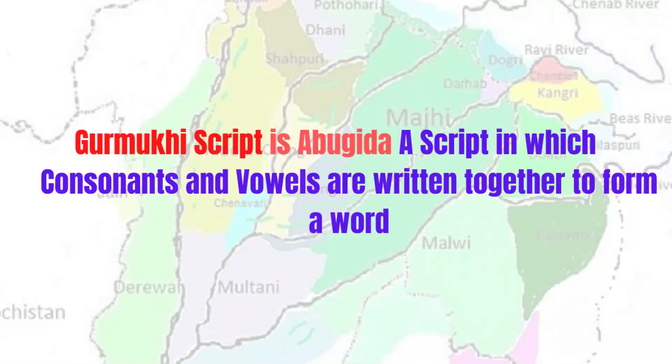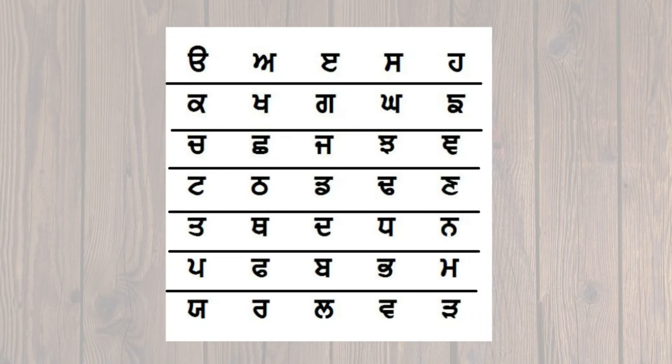Gurmukhi is an abugida script, meaning that the vowels and consonants are written as one unit to form a word, and diacritics are used to alter the meaning of a word. Gurmukhi script is officially used in the Punjab region of India. The Gurmukhi script consists of 35 letters known as Penti Akkhar, and it is divided into seven rows of five alphabets.